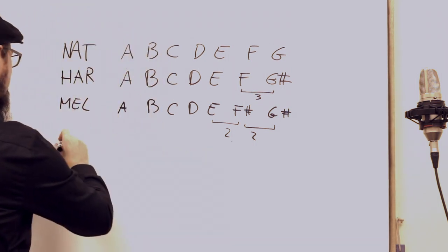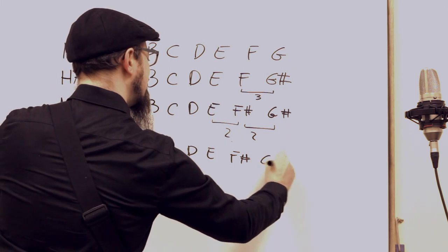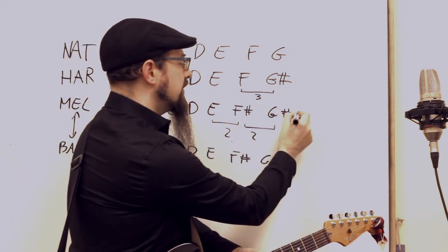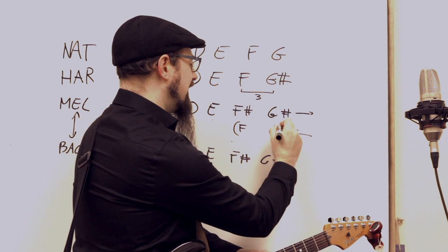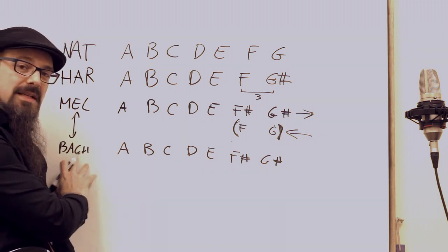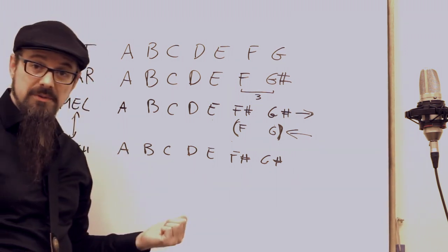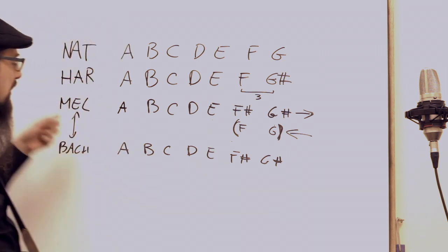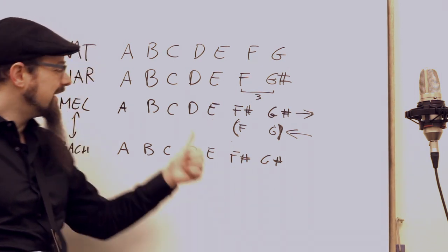The Bach scale is exactly like the melodic minor. The difference between those two is that in the melodic minor you have those notes going up and different notes going down. In the Bach scale, it's a scale like we normally understand - the same scale going up and going down. And this explains what Bach was doing.